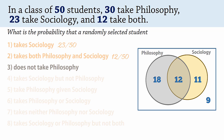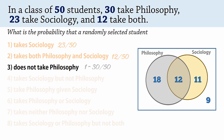Number 3: the probability that a student does not take philosophy can be found using the complement rule. That is, 1 minus the probability that a student takes philosophy, which gives 1 minus 30 over 50, and that gives 20 over 50.